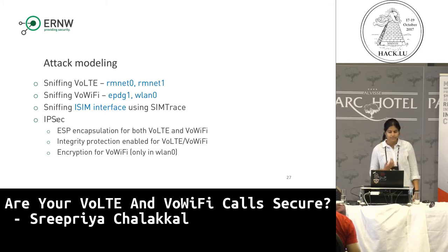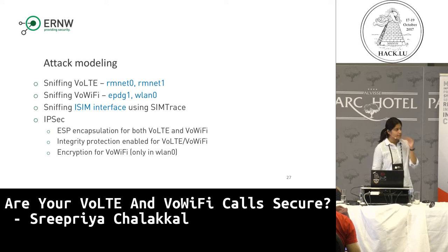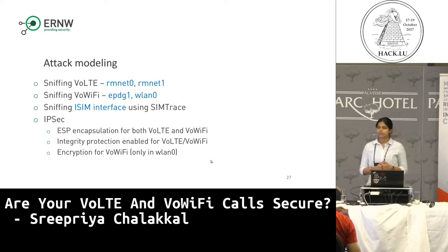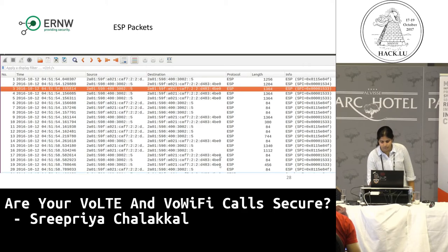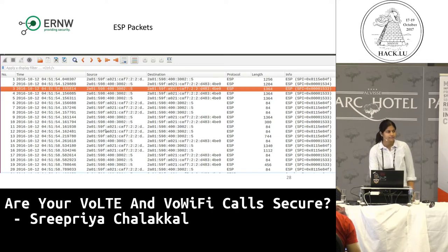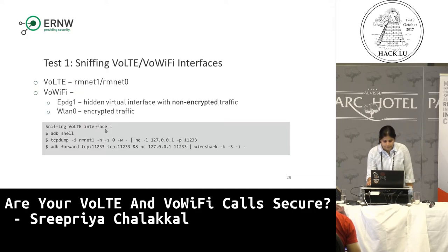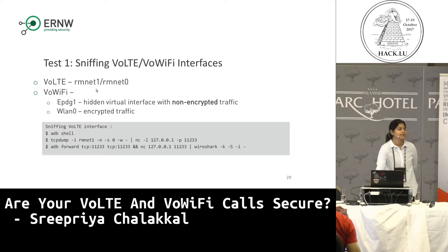There is IPsec in place — specifically ESP, Encapsulation Security Protocol. So it's not plain as in OpenIMS before. This means there is integrity protection — a hash is added to each and every SIP request sent. In the case of voice over Wi-Fi, there is also encryption because it goes through the internet. This is how the ESP packets would look like. In the case of voice over LTE, it's always IPv6 for the providers I looked at.